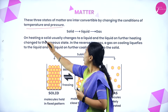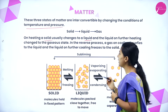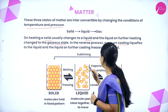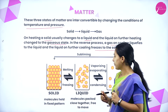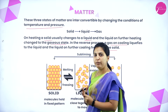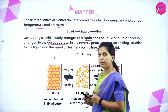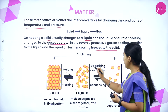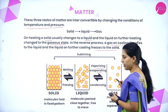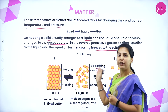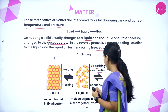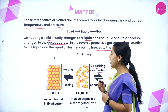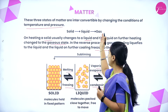On heating, a solid usually changes to liquid, and further heating changes the liquid to a gaseous state. In the reverse process, a gas on cooling liquefies to liquid, and liquid on further cooling freezes to solid. So a solid melts to liquid on heating, and further heating causes vaporization to gas. Gas condenses to liquid, and freezing gives solid.